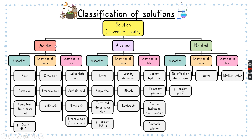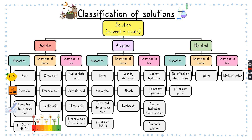Let's look at acidic solutions first. The properties of acids are that they are sour and corrosive, they turn litmus paper red — so the blue one turns red — and they have a pH of 0 to 6. Some examples at home include citric acid, ethanoic acid or vinegar, and lactic acid found in yogurt. Examples in the lab are hydrochloric acid, sulfuric acid, nitric acid, and ethanoic acid, also called acetic acid.